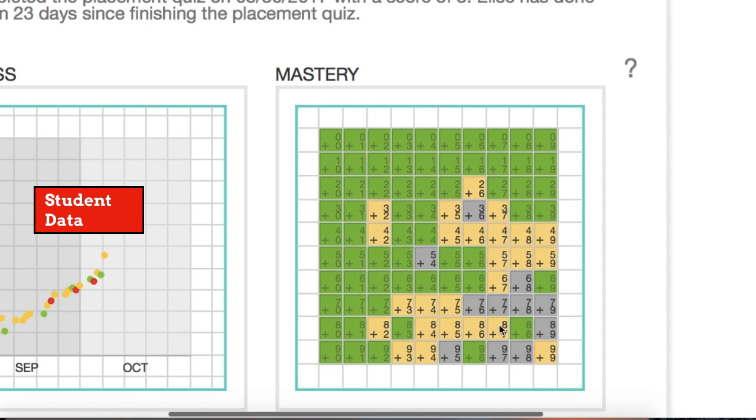Green means that she has that fact mastered. Yellow means that she knows the math fact but is not answering it quickly, and gray means she still needs to learn the math fact. So you can really drill down and get specific information about which math facts students need to learn.